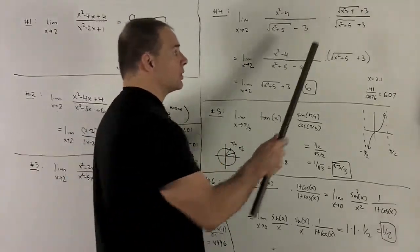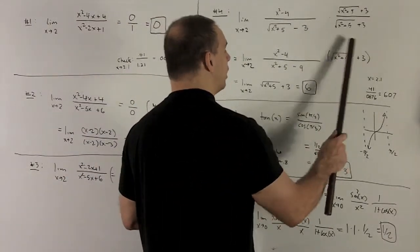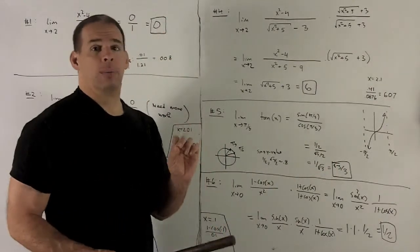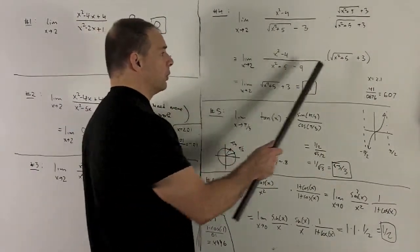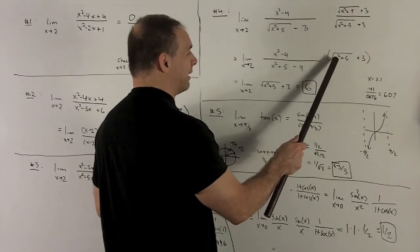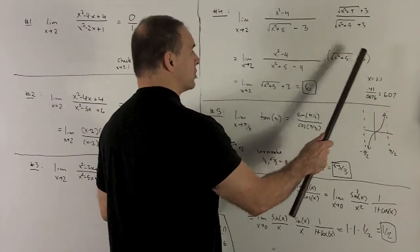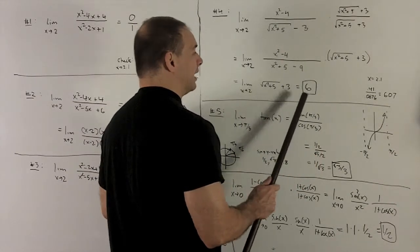What's left over? Well, we still got to deal with this guy here, but we know our rule is just going to be evaluation. So I put a 2 in here, and what's going to happen? I'm going to get square root of 9 plus 3, which is going to give me a 6.